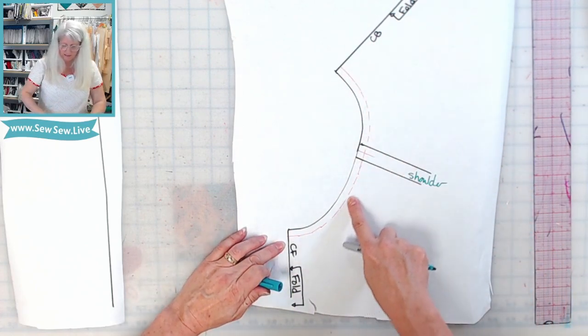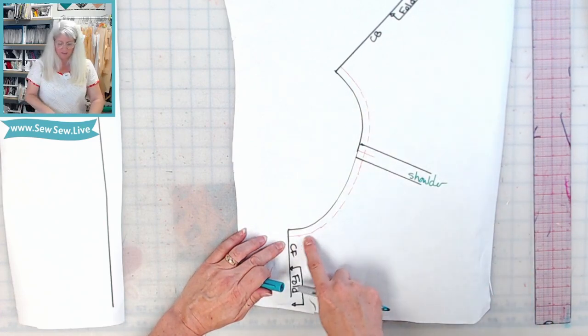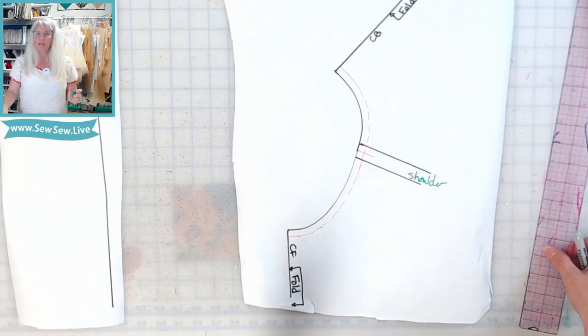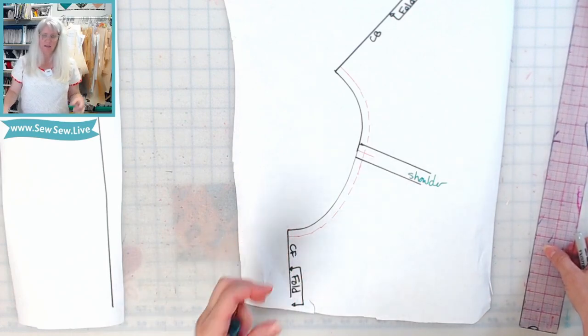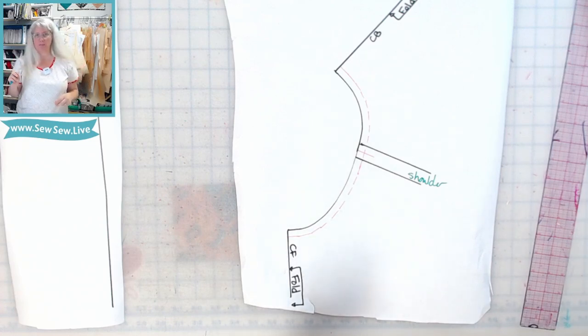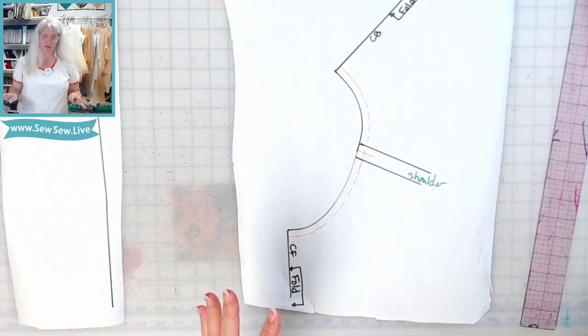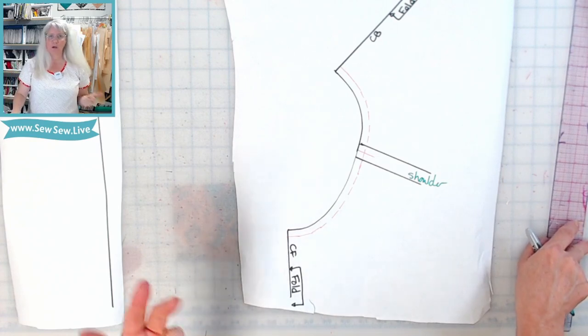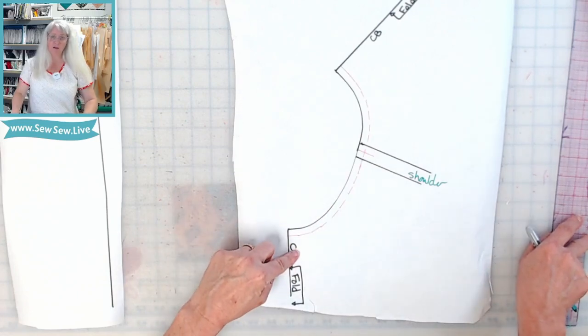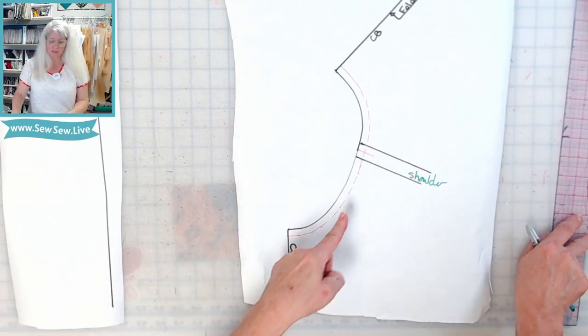Then I have my neckline seam allowance drawn in, so whatever your seam allowance is, this happens to be three-eighths. If your pattern already allowed for a neckband, you can use your neckline as is. If your neckline on your shirt is higher up and you want to add a neckband, you might need to cut off the neckband width of your neckline first before you do this step. So if you're going to use a neckband that's say one inch wide finished, trim one inch off of your entire neckline of your pattern first, and then when you get to this point, come back.